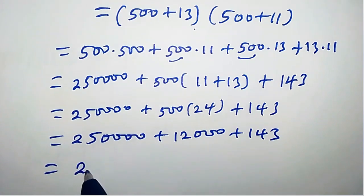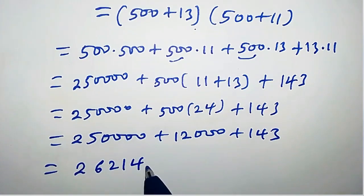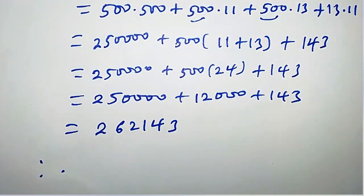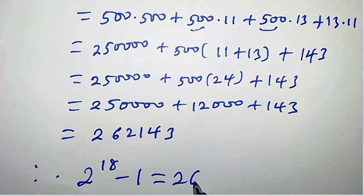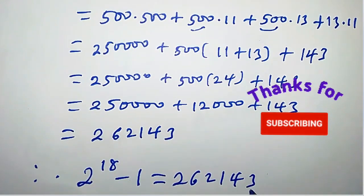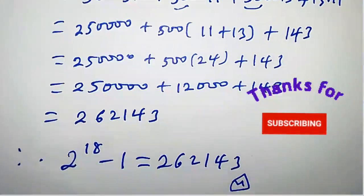When you add this guy very well, you will obtain 262143. Therefore, 2 to the power of 18 minus 1 is simply equals 262143, which is the required solution.